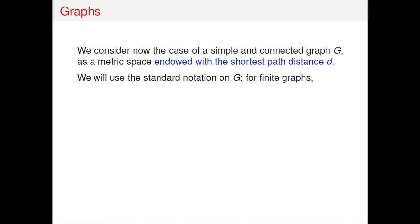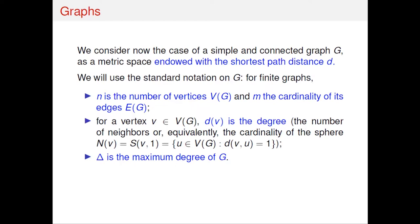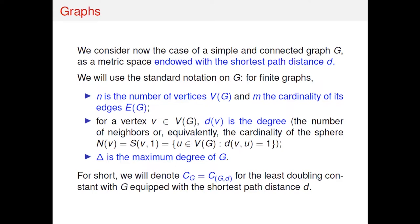Some notation: V is the set of vertices, E is the set of pairs of neighboring vertices (the edges). N(v) denotes the neighbors of vertex v — the vertices at distance one. The degree of a vertex is the number of neighbors; we always assume each vertex has finitely many neighbors, though the degree may not be uniformly bounded. If it is bounded, we call the maximum degree capital delta. The metric is fixed as the shortest-path distance, and the optimal doubling constant on G is denoted C_G.